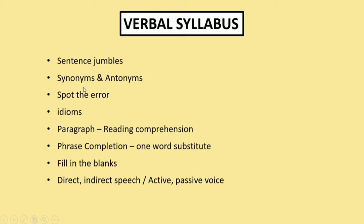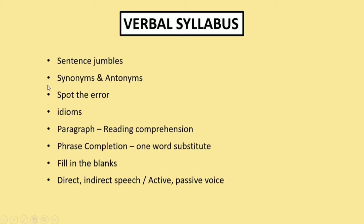For verbal ability in detail: sentence jumbles means you get five sentences not in the correct order and you need to rearrange them. Synonyms and antonyms you already know. Spot the error is an important topic — you may get many questions from it. Idioms will also appear. For paragraph/reading comprehension, you get a passage and five questions based on it. Phrase completion requires choosing the correct word for a phrase. Fill in the blanks gives a sentence with a missing word — synonyms and antonyms may appear here too.